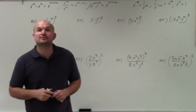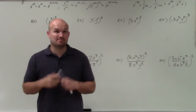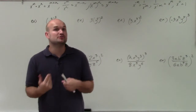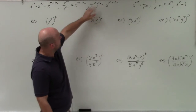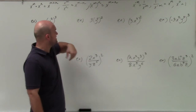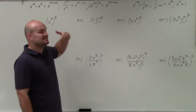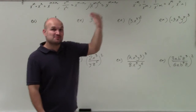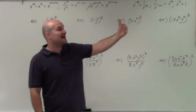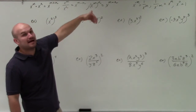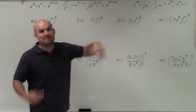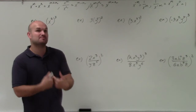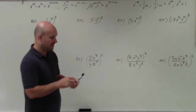Welcome, ladies and gentlemen. What I'd like to do is show you how to simplify an expression with exponents using the power rule. I wrote the power rule right up here. What it basically says is when you have x to the m — x raised to the power of m — and that is raised to the power of n, then you're going to multiply m times n. Basically, you're multiplying your two powers together when you have an exponent raised to another power.